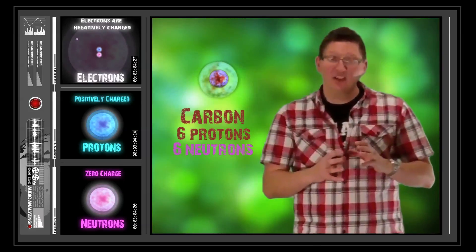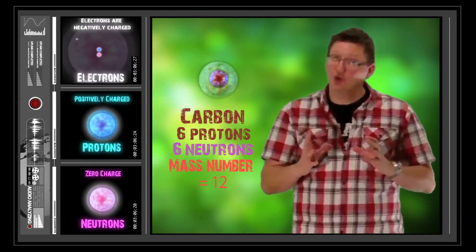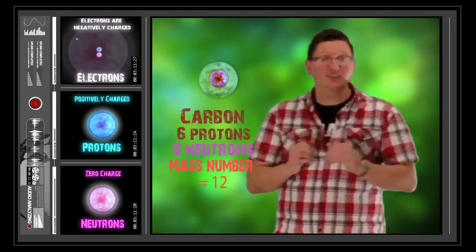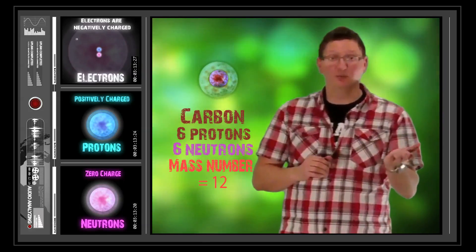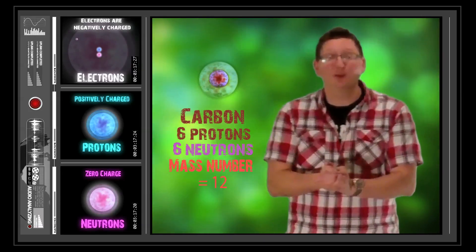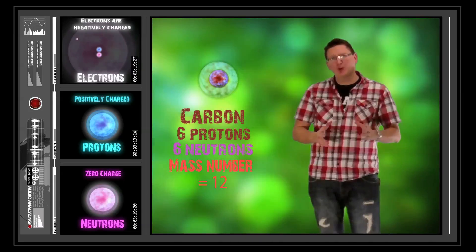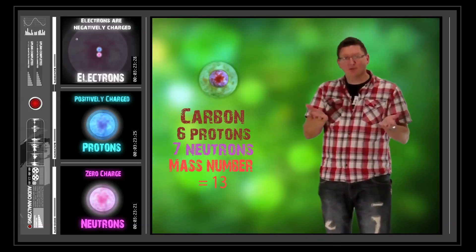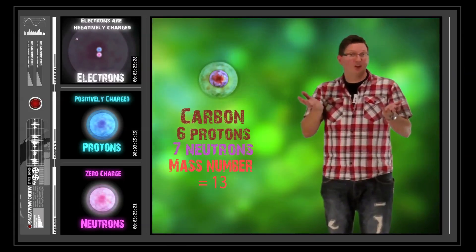But it can have 6 neutrons, giving it an overall mass of 12, 6 and 6. So we've got 6 protons and 6 neutrons, giving a total nuclear mass of 12. Or it can have 7 neutrons, giving an overall nuclear mass of 13.